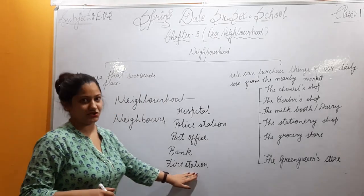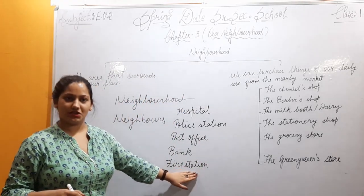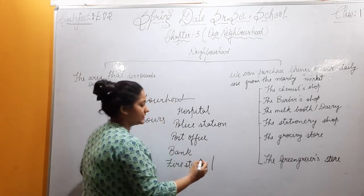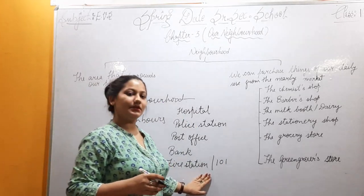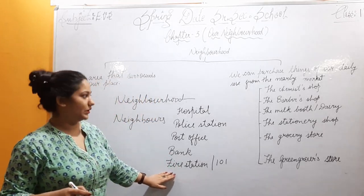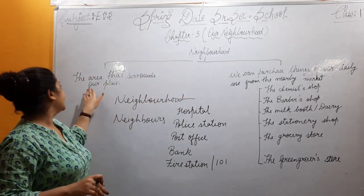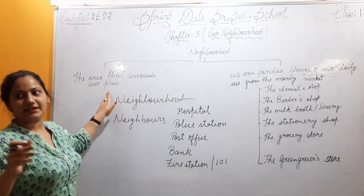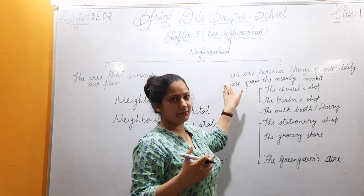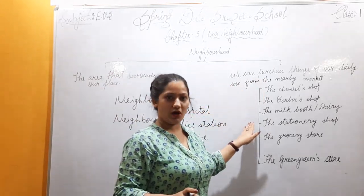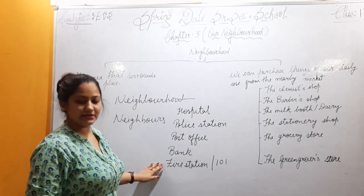The last one is the fire station — when your neighborhood catches fire, whom do you call? The fire station. The number you call is 101. When you call 101, the fire station will help you with the fire brigade. To recap what we learned today: neighborhood is the area that surrounds our place. In the neighborhood we have markets with many shops, hospitals, police stations, post offices, banks, and fire stations.